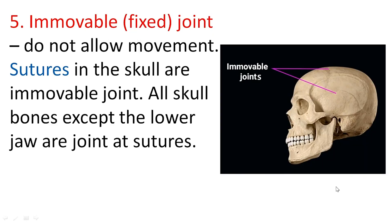The fifth type is the immovable or fixed joint, which does not allow movement. The sutures in the skull are immovable joints. All skull bones except the lower jaw are joined at sutures.